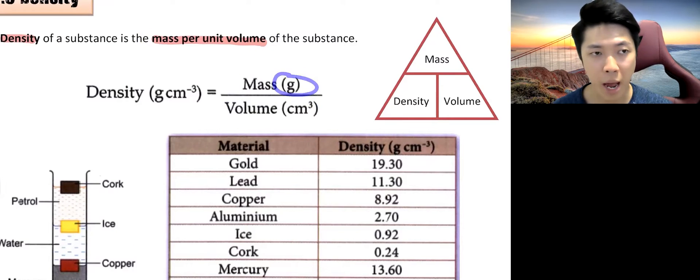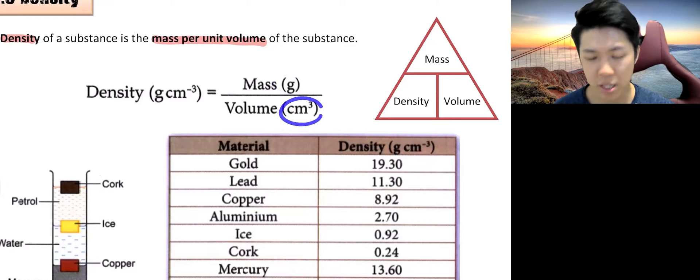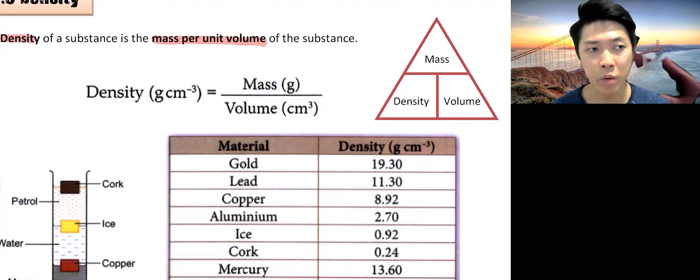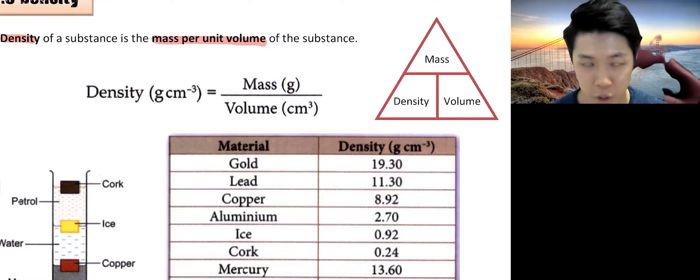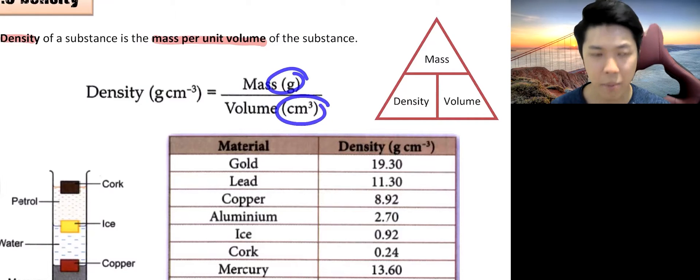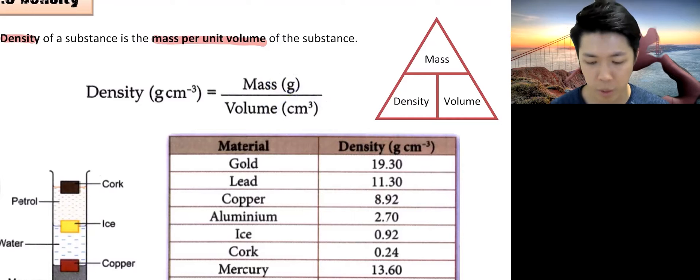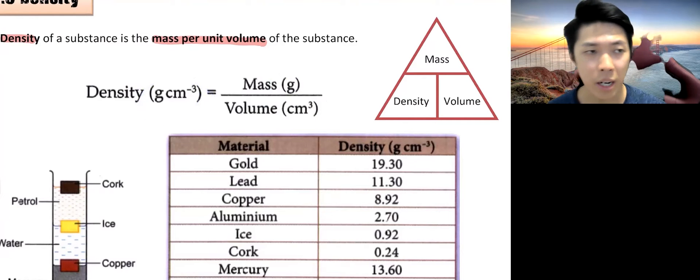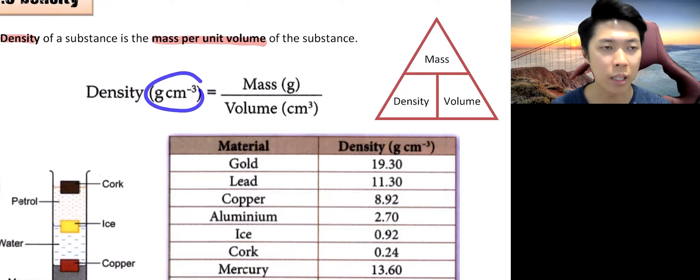So mass in a unit of grams, volume in a unit of cm³. All this unit you are pretty sure, I'm pretty sure you are familiar with because you have done that in primary school. So when mass divided by cm³, this is what you get as your unit which is g cm⁻³. You just have to remember this as a unit.